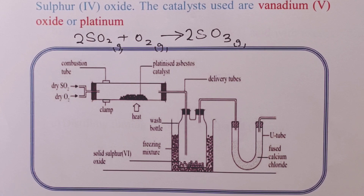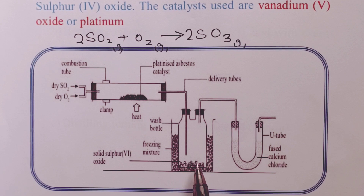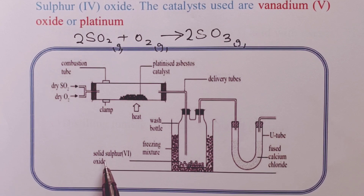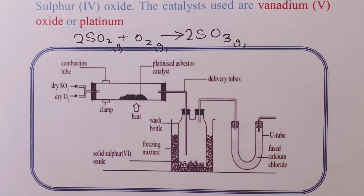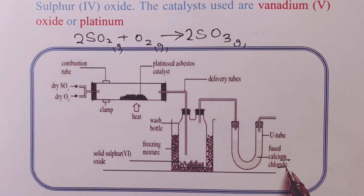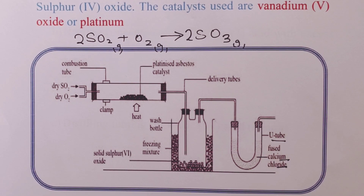This reaction is reversible, so when we receive the gas, we subject it to a cold environment where it quickly forms a solid. The solid has a very high affinity for moisture, so we protect it from moisture using calcium chloride packed in a U-tube on the far right.